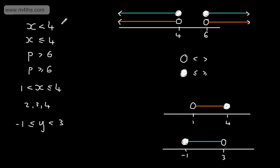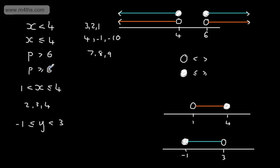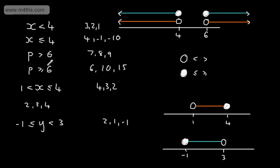If asked to state 3 integer values satisfying the y inequality, we could have 2, 1, and minus 1. For p greater than 6, we could have 7, 8, 9. For p greater than or equal to 6, we could have 6, 10, 15. For the compound inequality 1 < x ≤ 4, we could have 4, 3, and 2. For −1 ≤ y < 3, we could have 2, 1, and minus 1. We don't have to choose consecutive numbers — any values satisfying the inequality are valid.